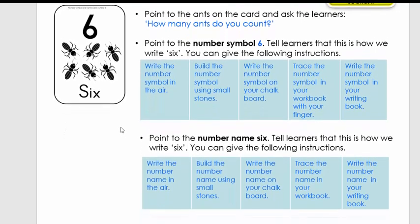Let us repeat the same with the word. So firstly, we're going to write the word in the air. Build the number name using small stones. You need to pause the video now. Welcome back. Write the number name on your chalkboard if it's in the classroom, or write it on a piece of paper. Now trace that number with your finger. It's now time to write the number name then in your writing book.